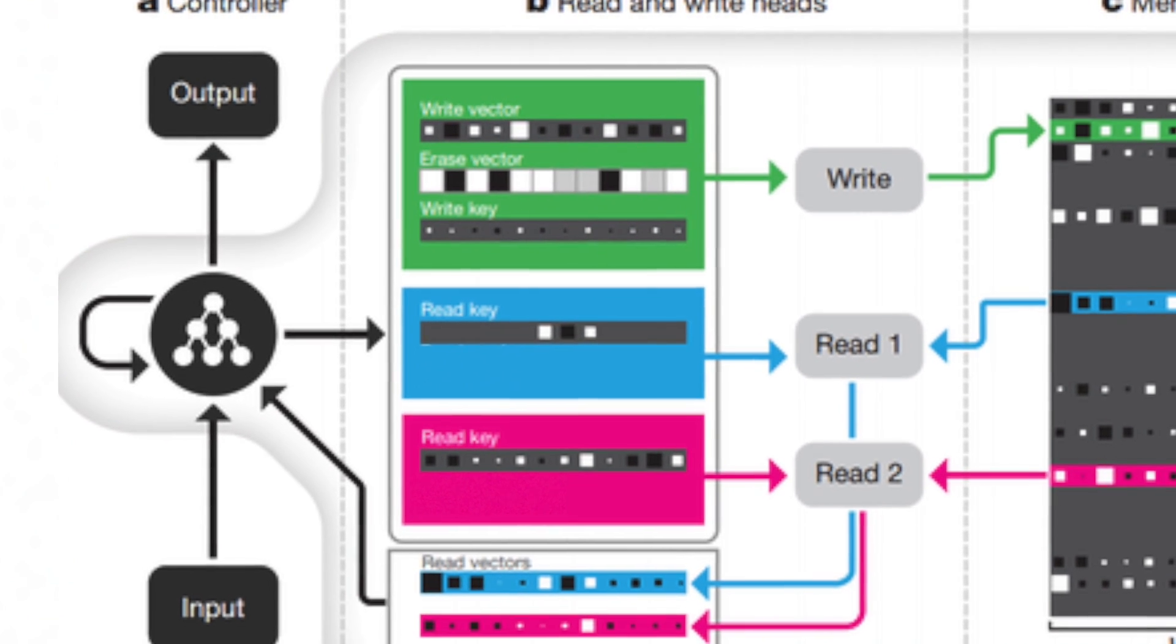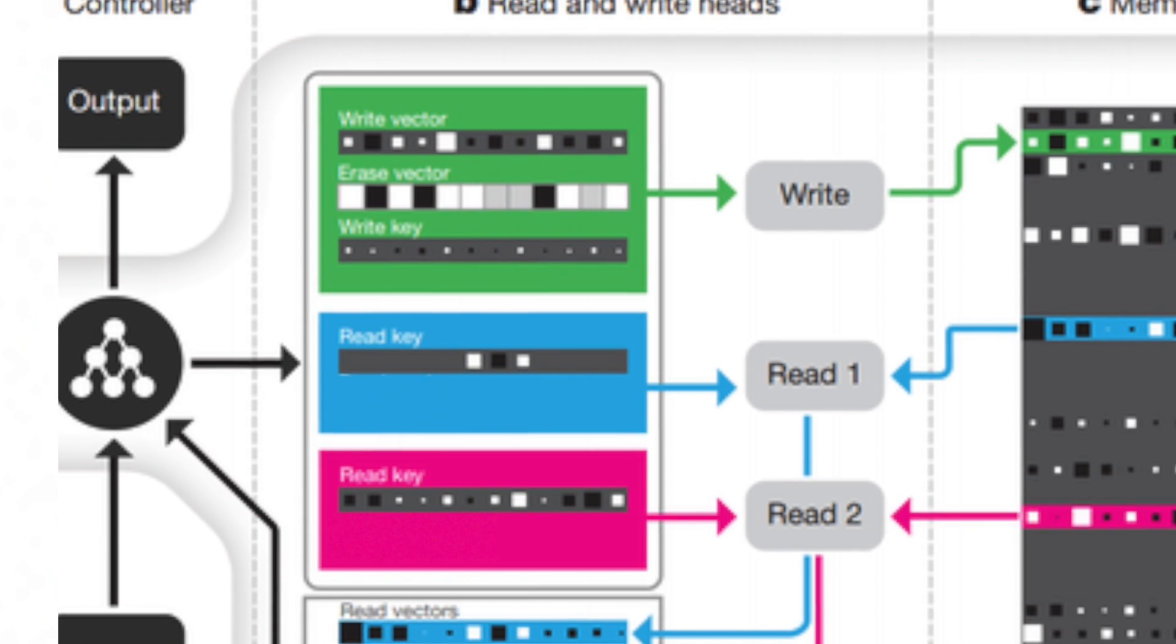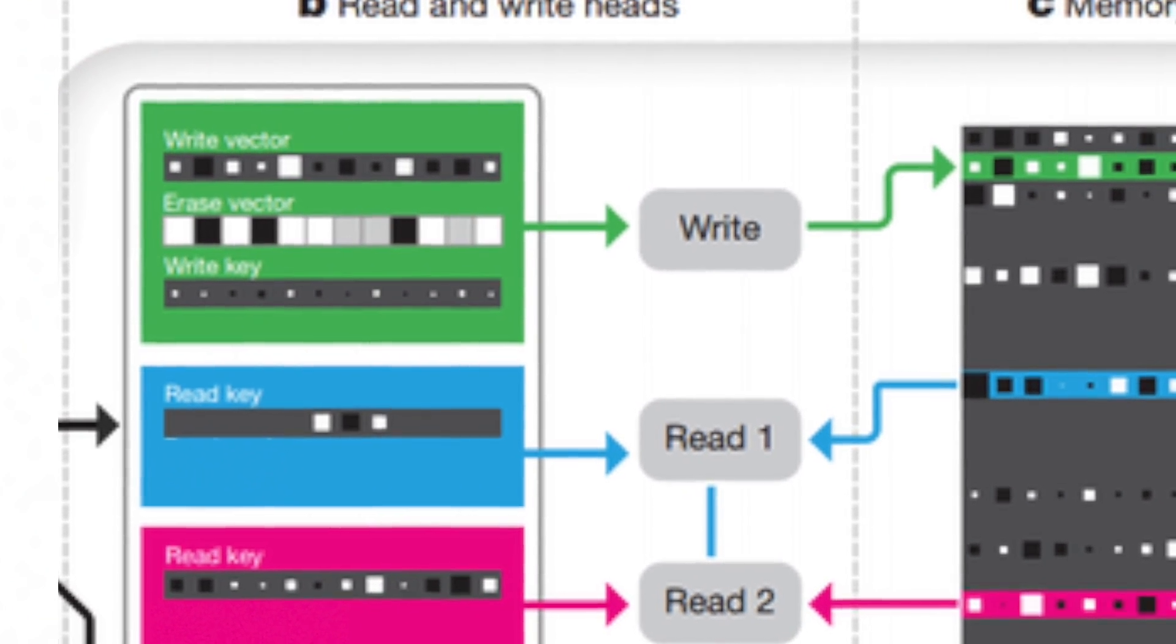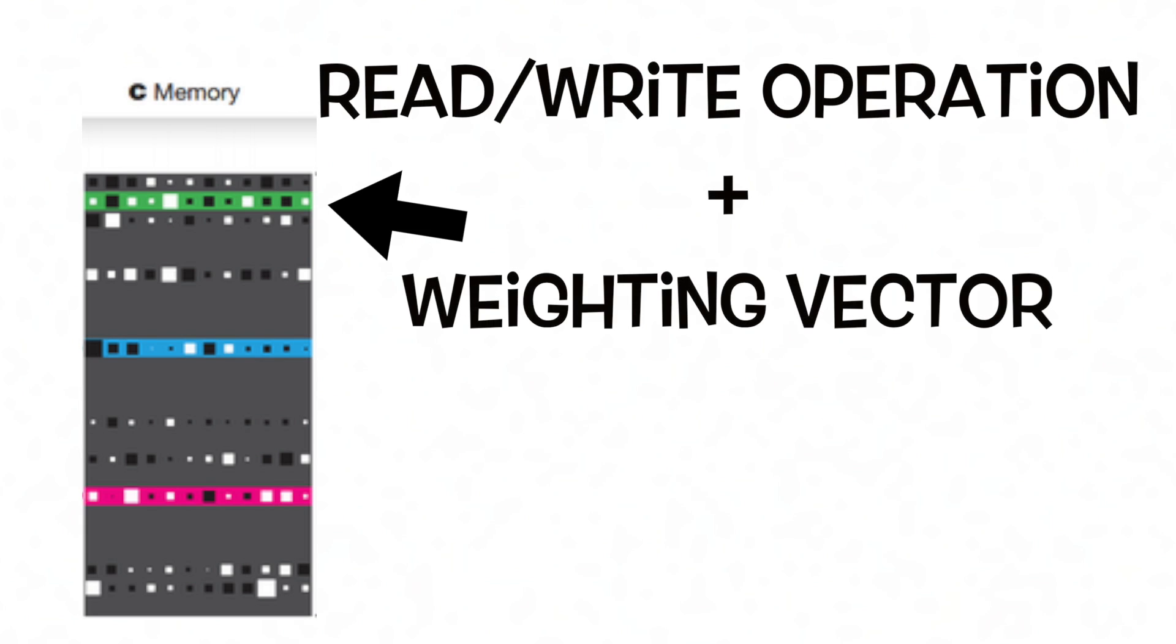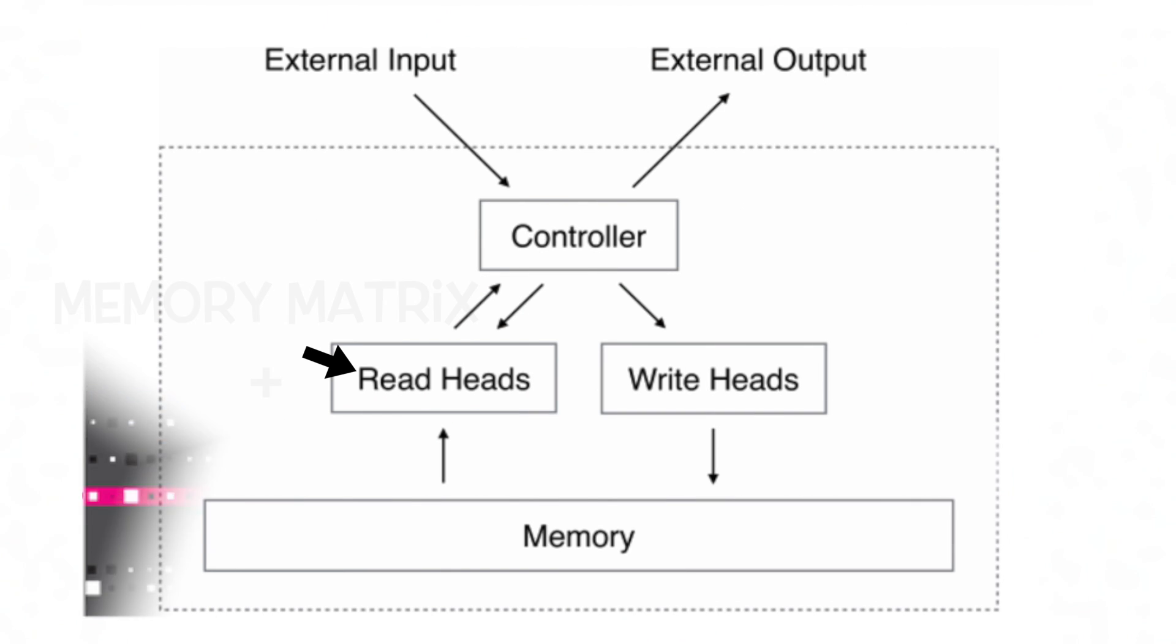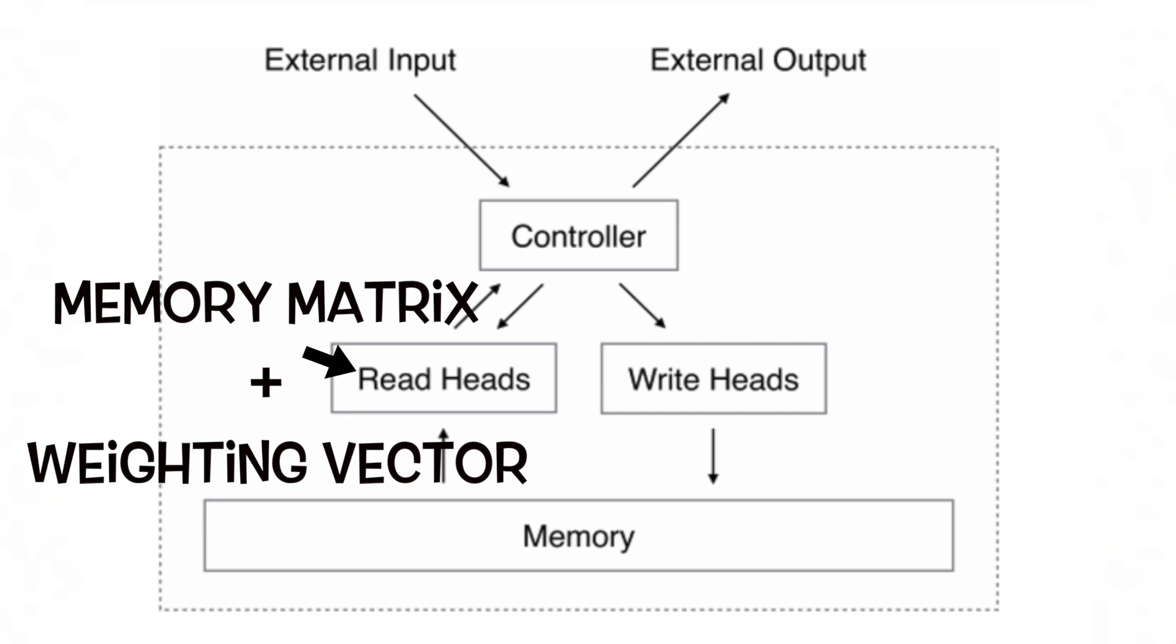Each row in the memory matrix represents a memory location. Read and write heads use a weighting vector with a component for each location. So if there are 10 memory locations, then the weighting vector with just one value at index 3 would focus the attention of the memory operation on location 3. But a weighting vector like this spreads its attention to the memory across multiple locations. A read operation is just a combination of the memory matrix and weighting vector.